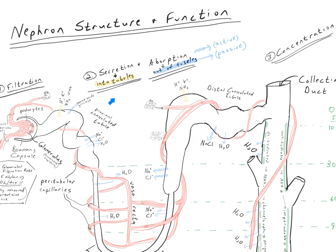As we move through the proximal convoluted tubules, we also see active absorption of sodium, and that in turn leads to passive absorption of the negative chlorine ions, and also water, as those positive ions are pumped into the interstitial fluid.